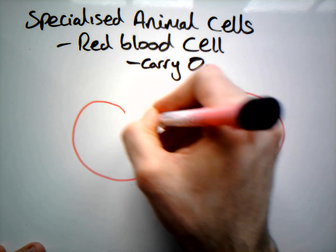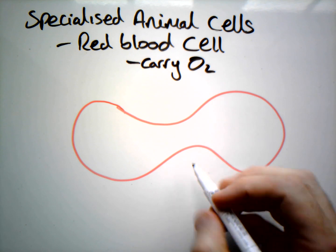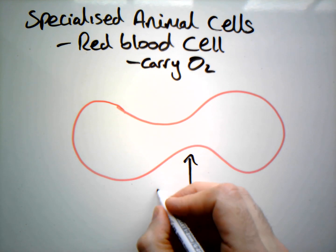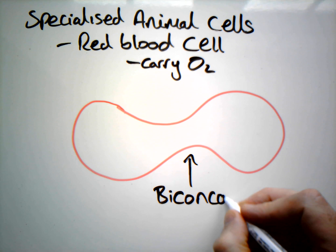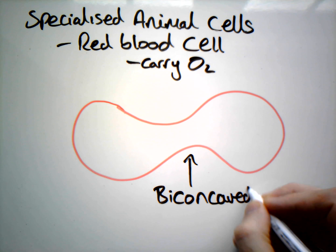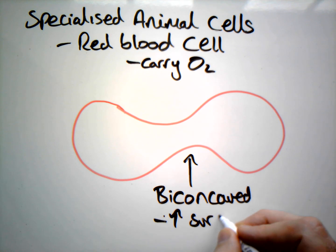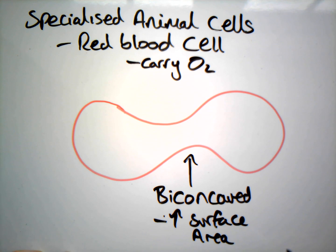I'm going to draw one here with this sort of weird shape where there's a dip in the middle. This dip means it is what we call biconcave, and all that does is increase the surface area, which allows us to carry more oxygen at any one time and for more oxygen to diffuse in and out of the red blood cell to where it needs to go.